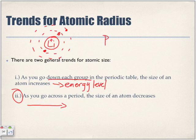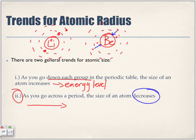As we move across to beryllium, the first energy level has two electrons, and on the second energy level we're adding another electron. Those electrons are showing a stronger pull towards the nucleus of the atom, thus resulting in a decrease in the size of the atom.